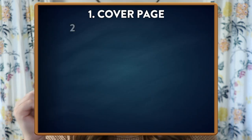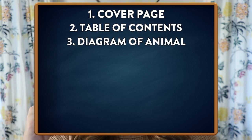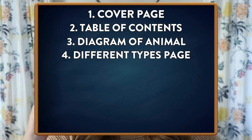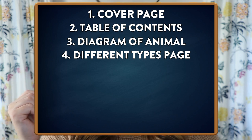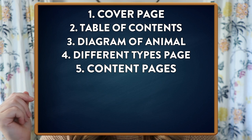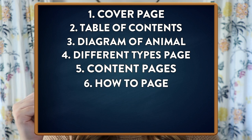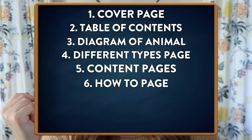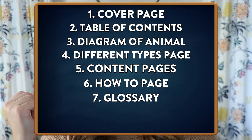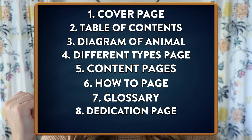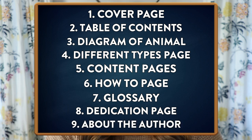Let me quickly run through what pages we include in our all-about book. By the end of the unit students have made a cover page, a table of contents, a diagram of their animal with labels, a 'different types' page, several content pages about where the animal lives and what it eats, a how-to page integrating another type of informative writing, a glossary of important words, a dedication page, and an about-the-author page.